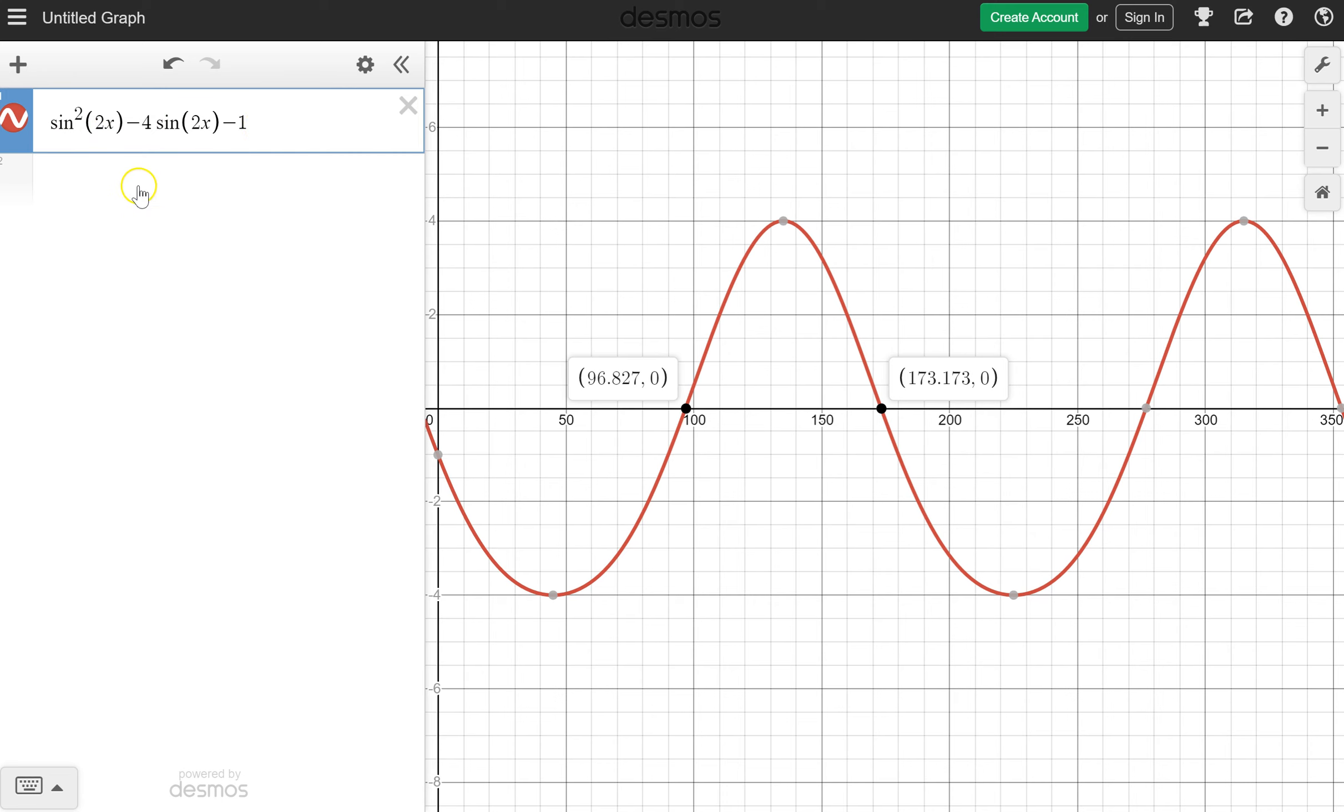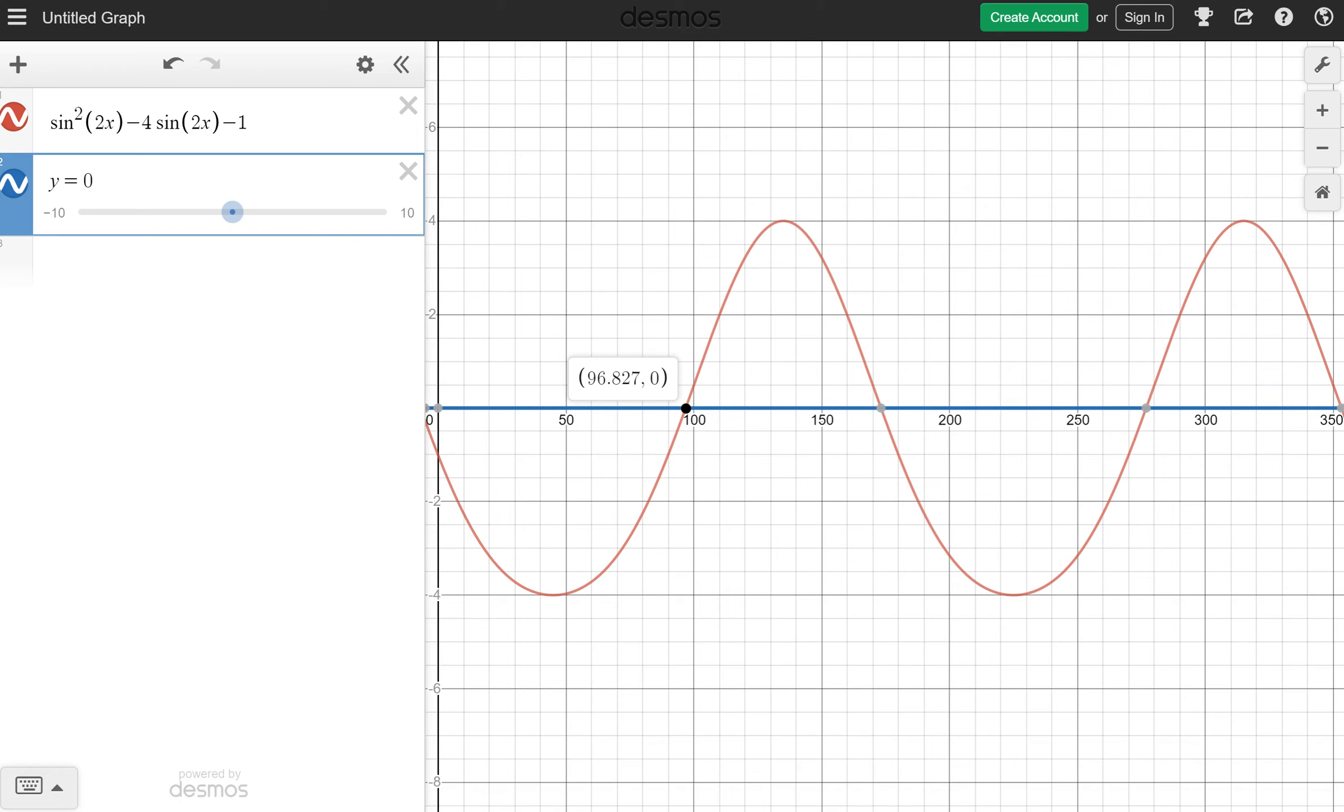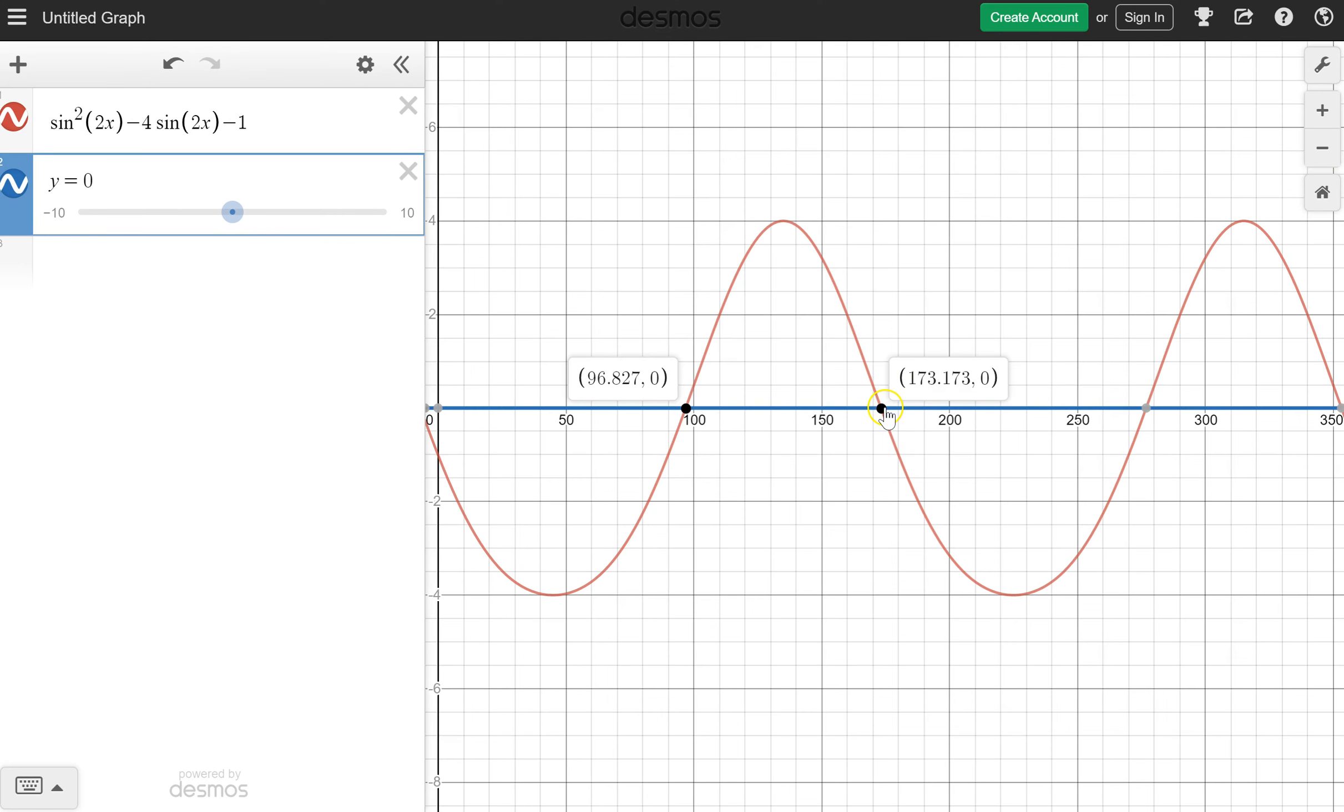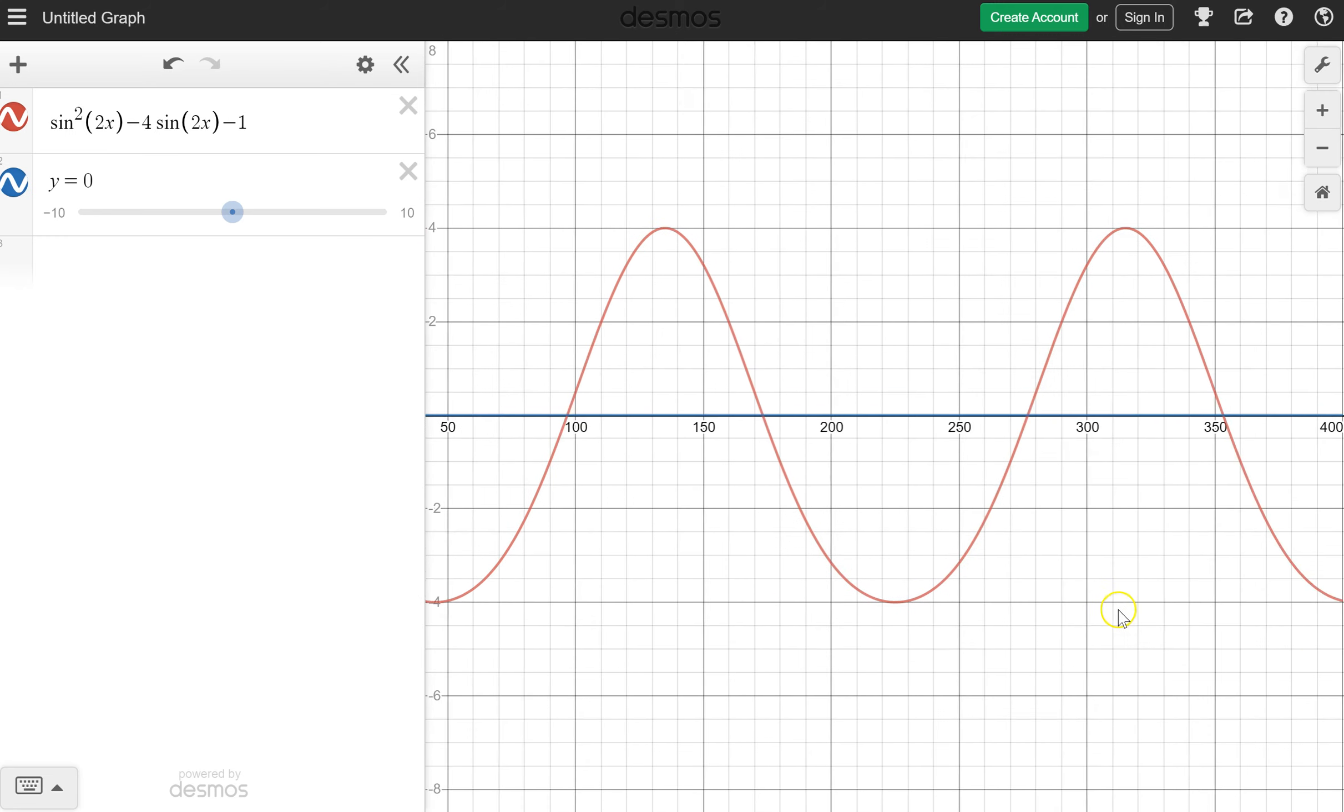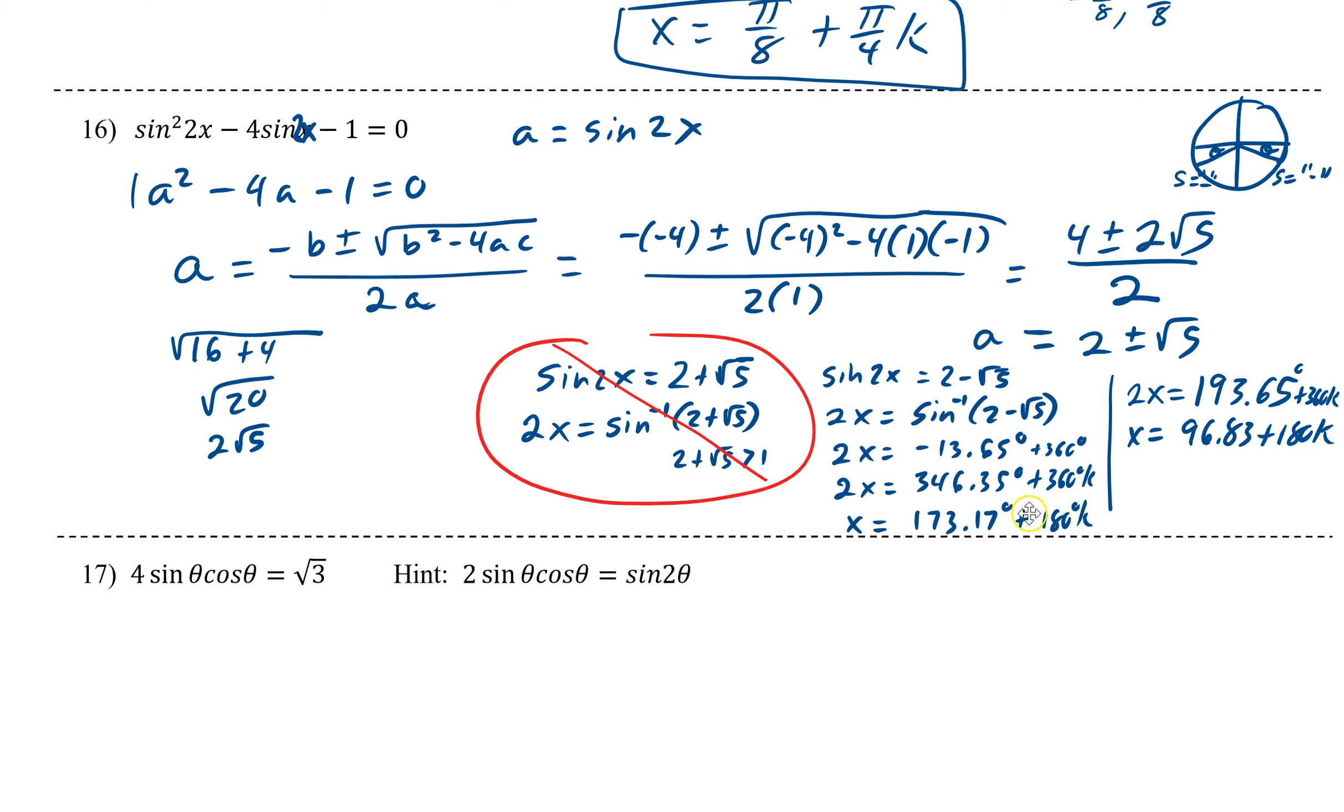You can also plug it into Desmos. Here's our equation. And remember, we want this to be y equals 0. We did this earlier to find all solutions. And there they are. So our first one was 96.83. The next one was 173, right there. And if you notice, they are π away. So, 360, 180 degrees away. So if you take this one and you add 180, we get 276. And then, if you take this one, the 173, and we add 180, we get 353, and so on. So it checks our solution for us, whatever we have.